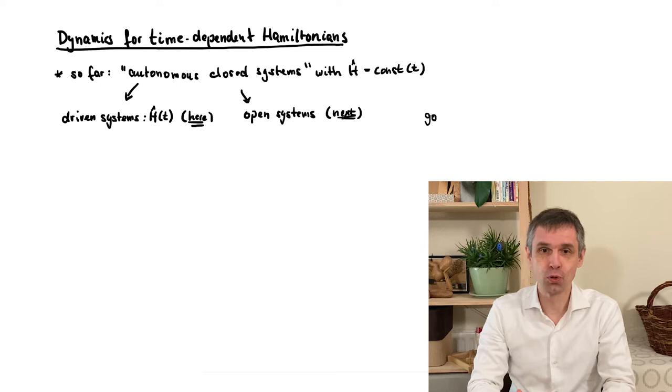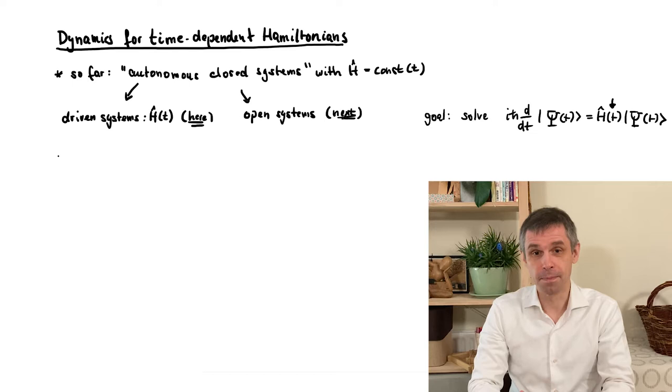So, the goal for this chapter is then to consider the time-dependent Schrödinger equation for situations where the Hamiltonian itself is a function of time.